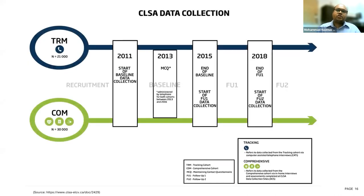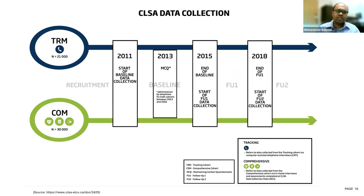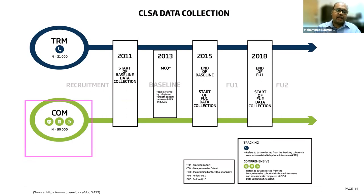CLSA is a long-term longitudinal study that started data collection in 2011. Baseline data collection was completed in 2015 and first follow-up data collection was completed in 2018. CLSA has two cohorts: the tracking cohort consisting of over 21,000 participants, and the CLSA comprehensive cohort consisting of over 30,000 participants. At the time of our analysis, we only had baseline and first follow-up datasets available, and we used the CLSA comprehensive cohort for our analysis.